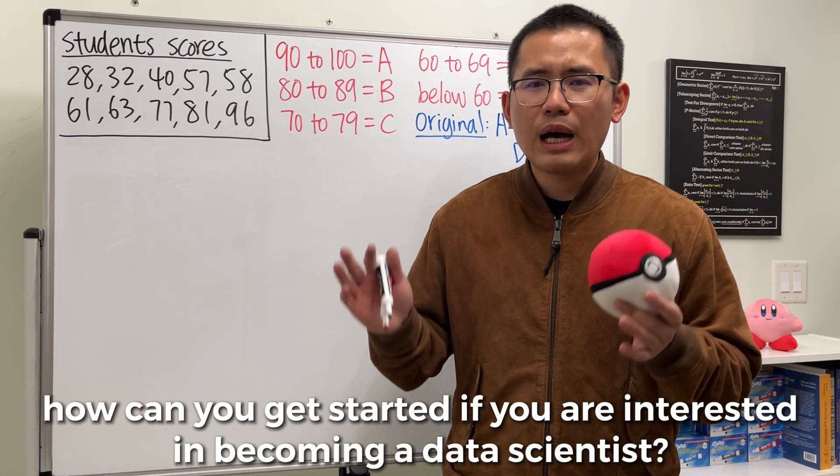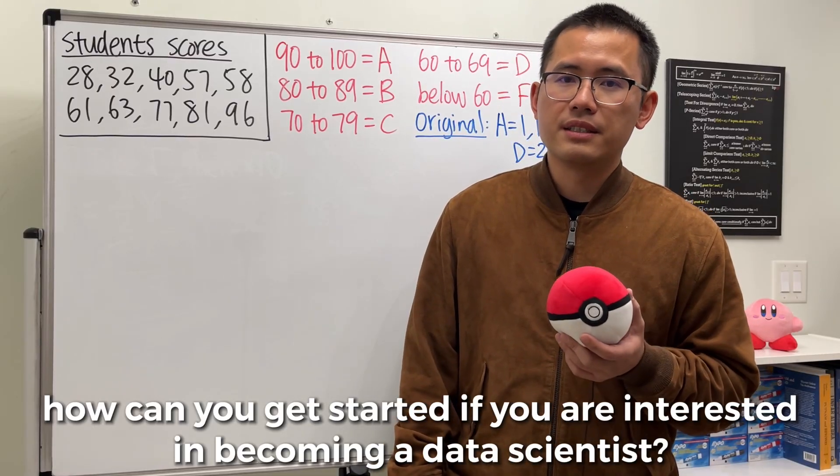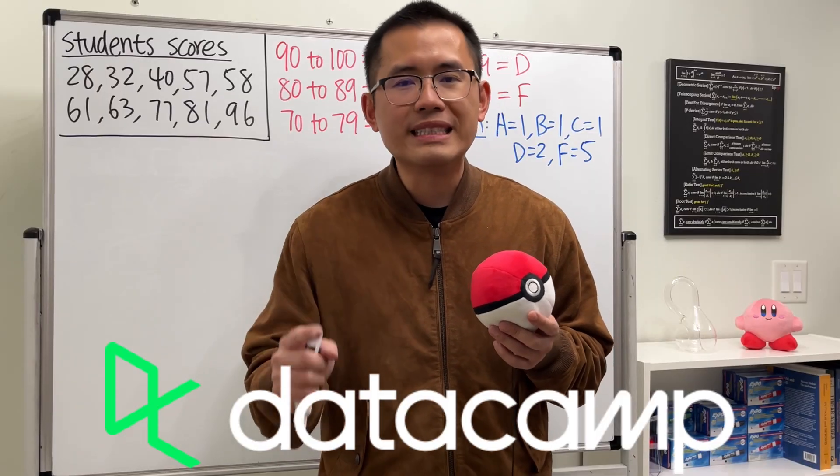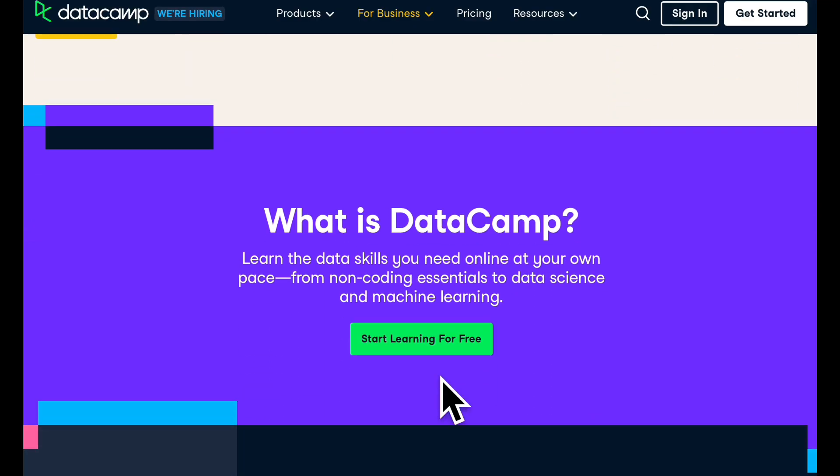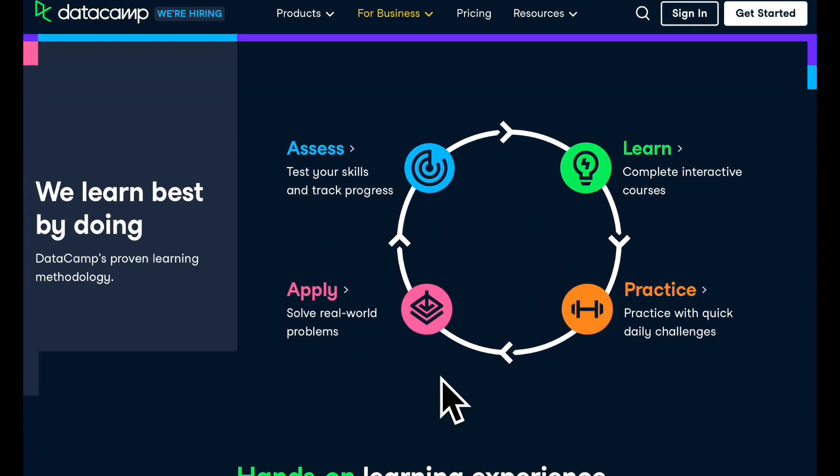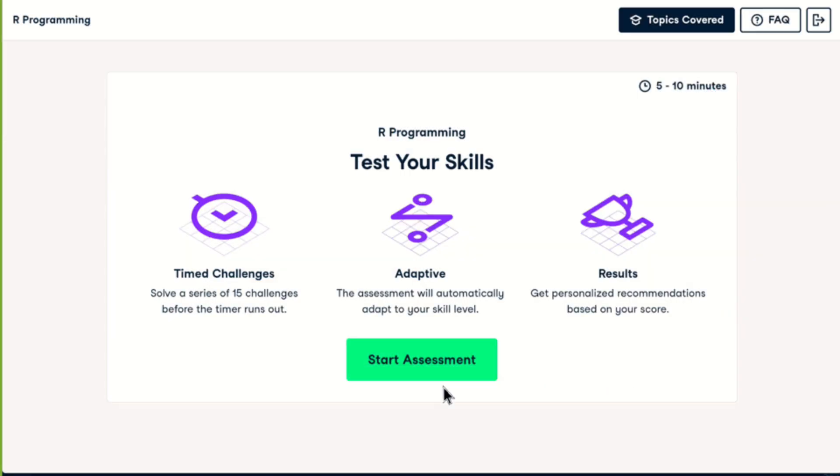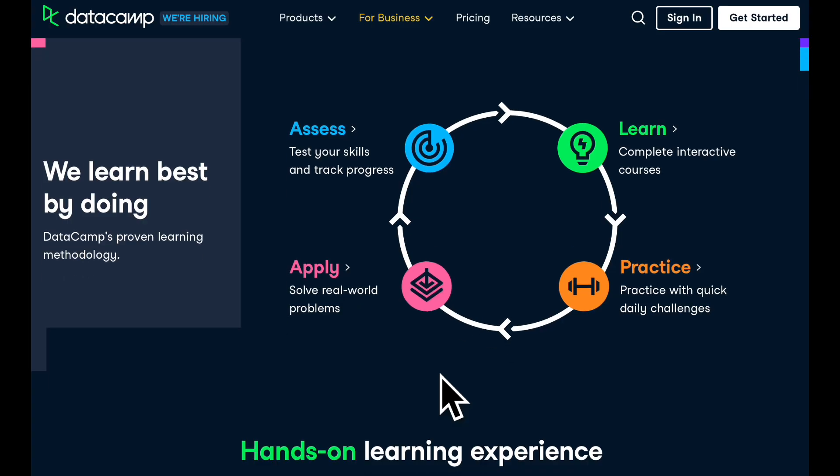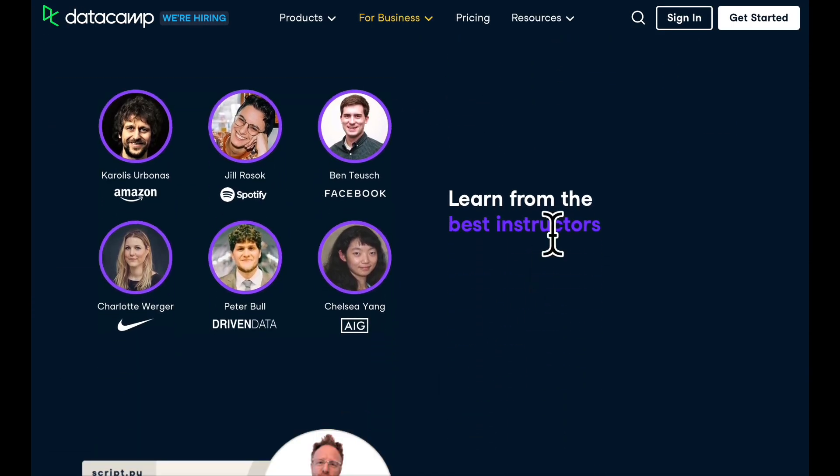So the question is, how can you guys get started if you are interested in becoming a data scientist? I want to thank today's sponsor, Datacamp, because they can help you exactly just that. Datacamp is an online learning platform that makes learning data skills easier and more convenient for everyone. You can take one of their free assessments and get personal learning recommendations and start learning a new skill. It has over 350 data science courses taught by real data science experts.